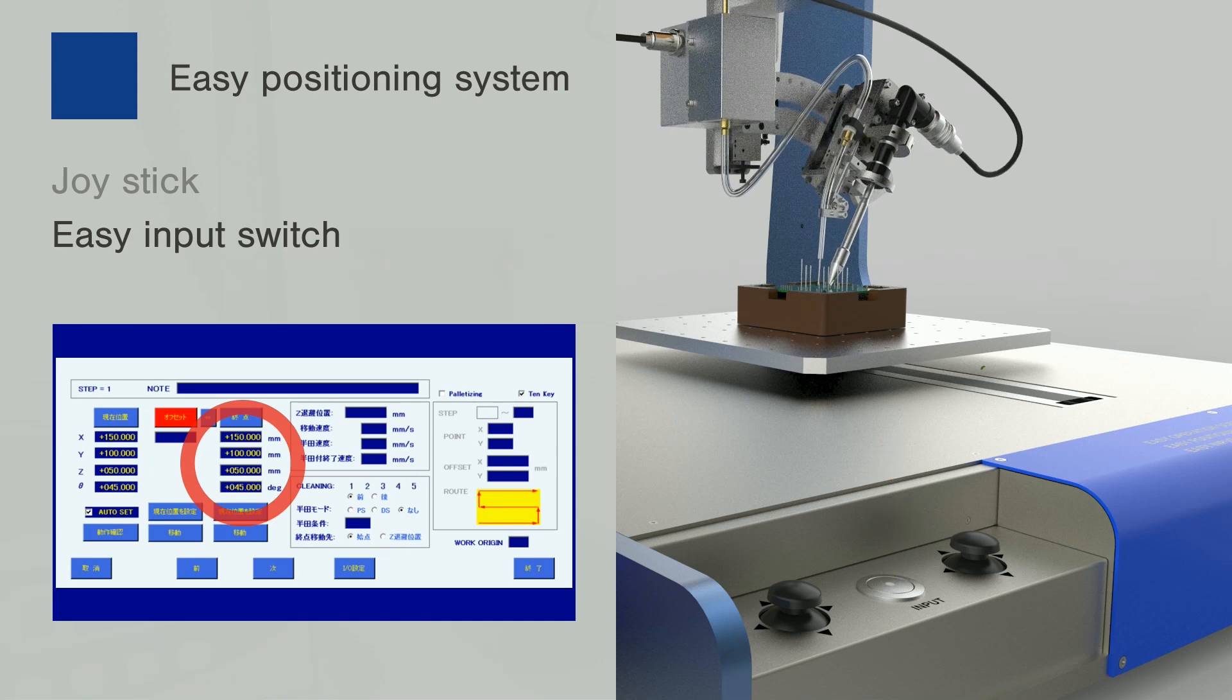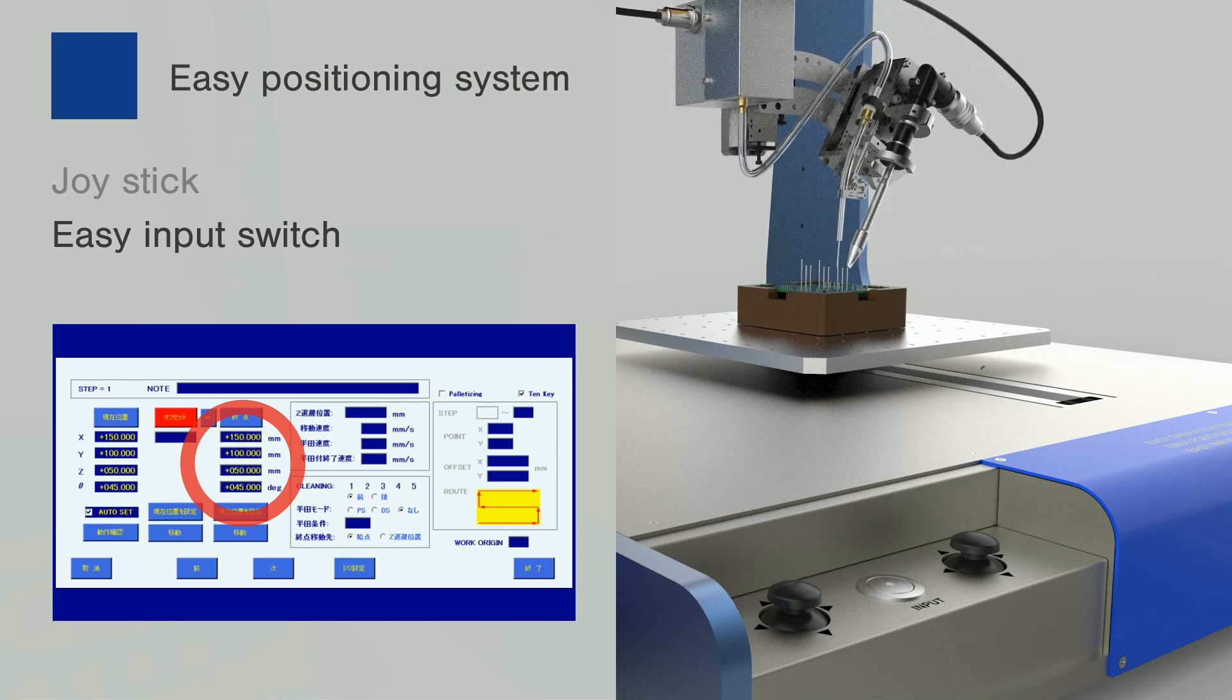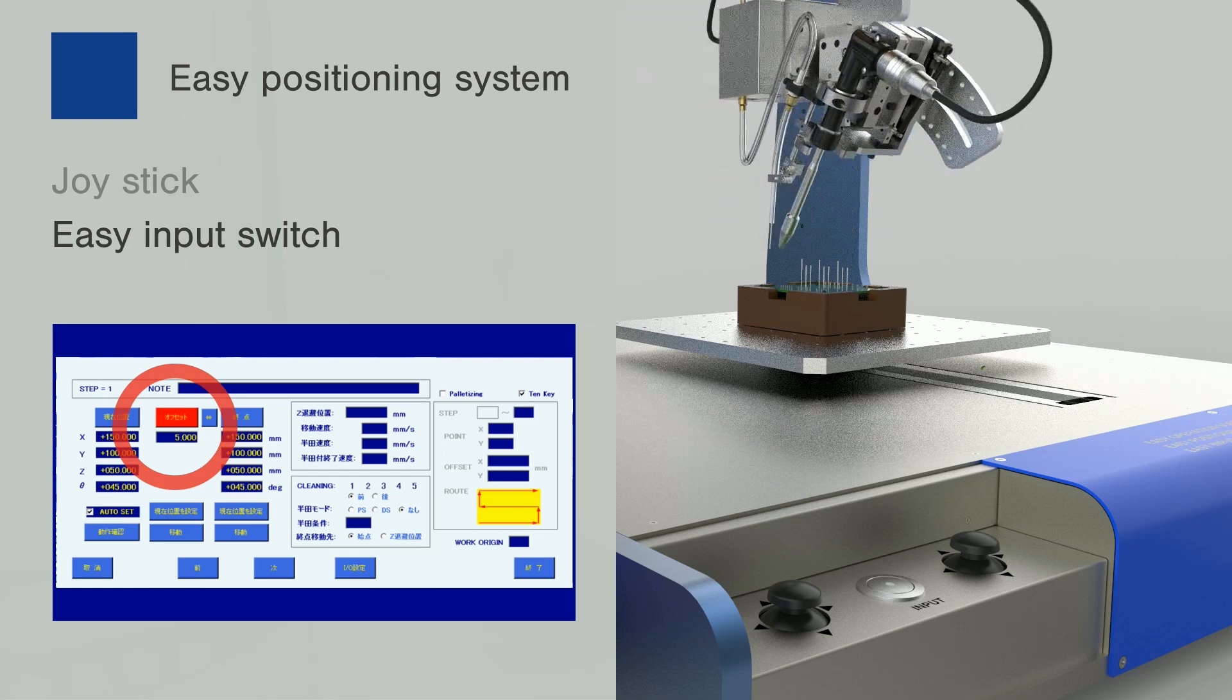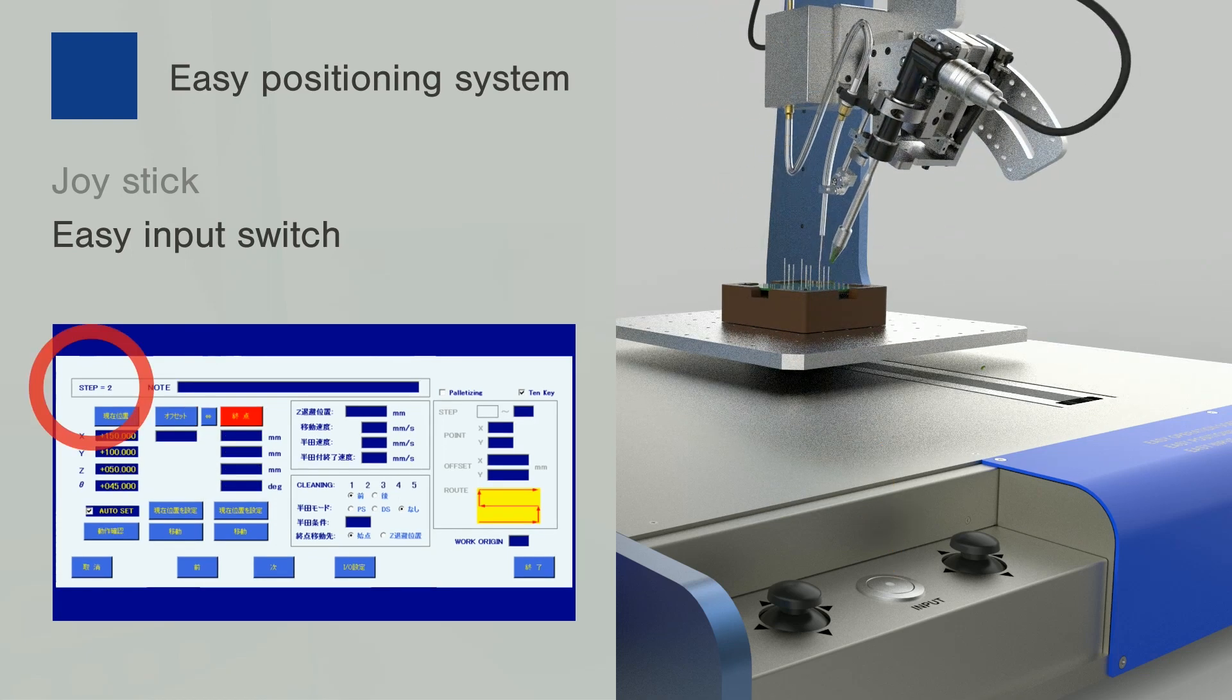The Easy Input switch located between the joysticks allows input of multiple points quickly, thanks to the ability to input the current coordinates of the robot without shifting the view to the tablet.